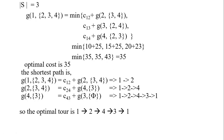Finally, the fellow is at city one — the origin — and must visit three cities: 2, 3, and 4. Visiting city two first gives 10 plus 25 = 35. Visiting city three first also gives 35. Visiting city four first gives 43. The minimum is 35, and either the first or second option can be selected since both give 35.